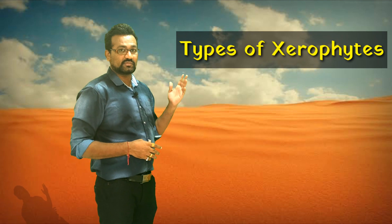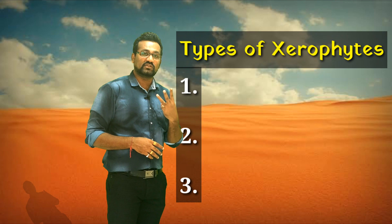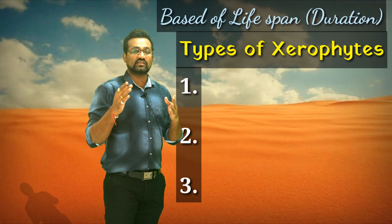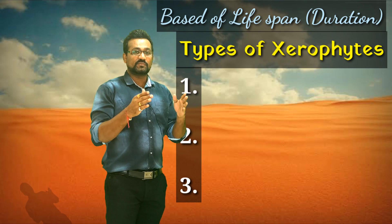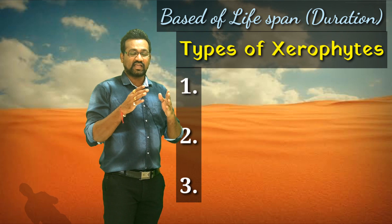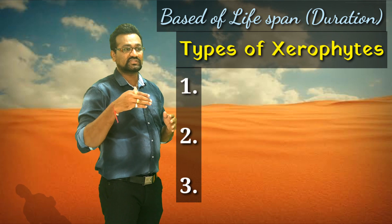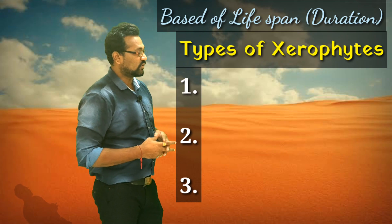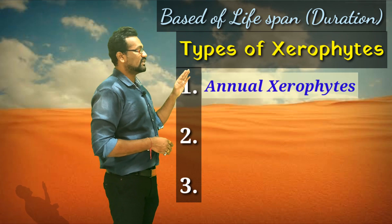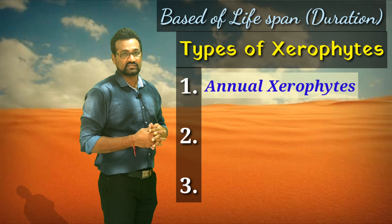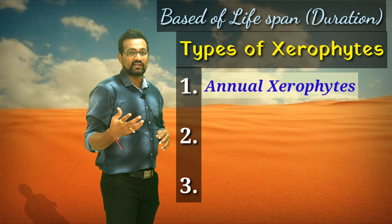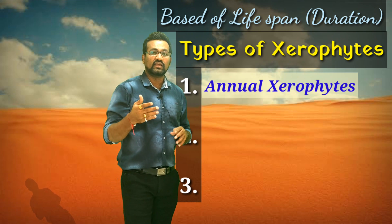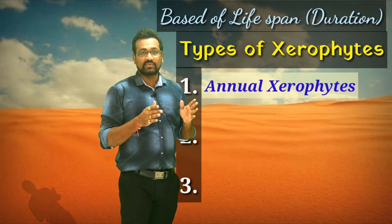There are only three types of xerophytes, classified on the basis of their life span — that is, on the basis of how much time they can withstand these conditions. The first type is annual xerophytes. These plants generally complete their life cycle within a one year period.